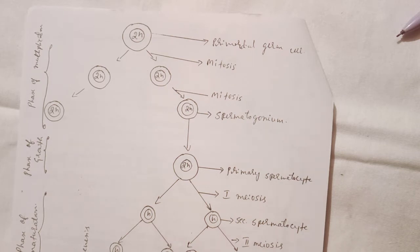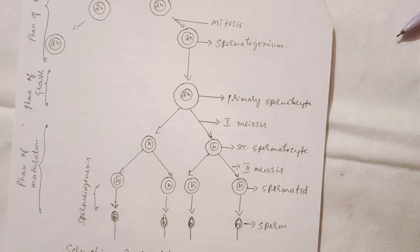Then again mitosis occurs, and then the two germ cells are present. One is spermatogonium. Then this spermatogonium becomes primary spermatocyte.